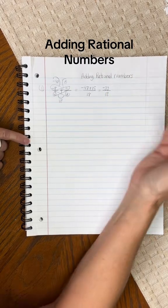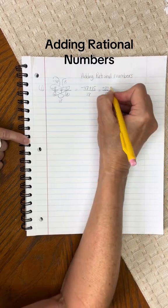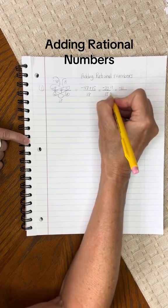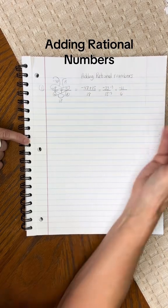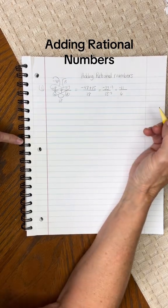And then we put it over 18. Make sure you check and make sure that it won't simplify. I know 3 will go into both of these. If I divide by 3, I get a negative 11 on top and 18 divided by 3 is 6. And it's usually okay to leave it in proper form as long as it is reduced.